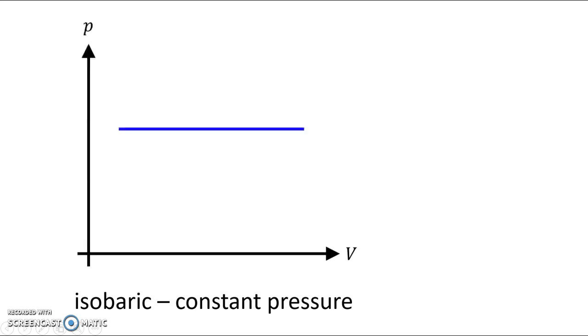The first one up is an isobaric process. Iso means constant, and bars refers to pressure. Normally we measure pressure in pascals, but there are other units, like bars or atmospheres. The graph is pretty simple.